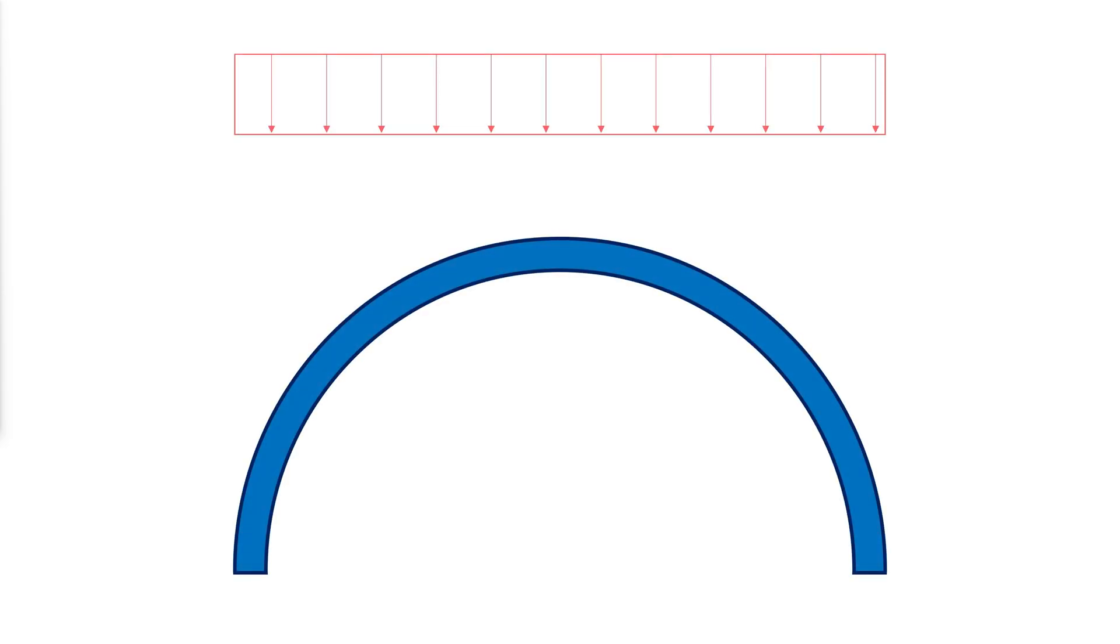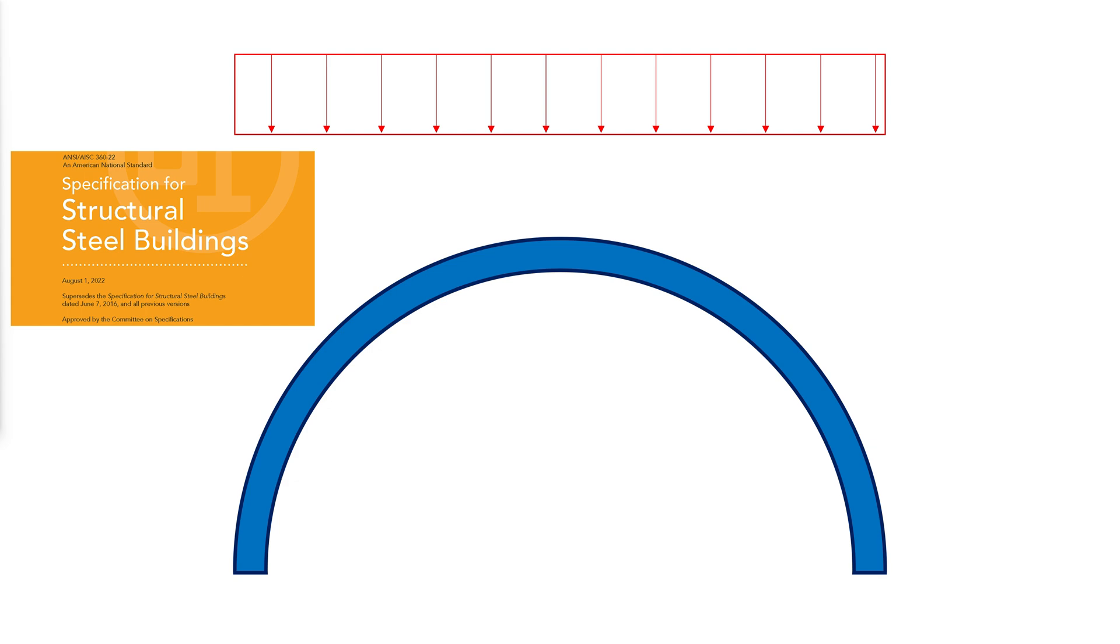This video discusses the behavior and strength of arches and beams loaded in the plane of curvature. The design method uses AISC specification equations for straight members to design curved members subjected to axial compression and in-plane flexure.